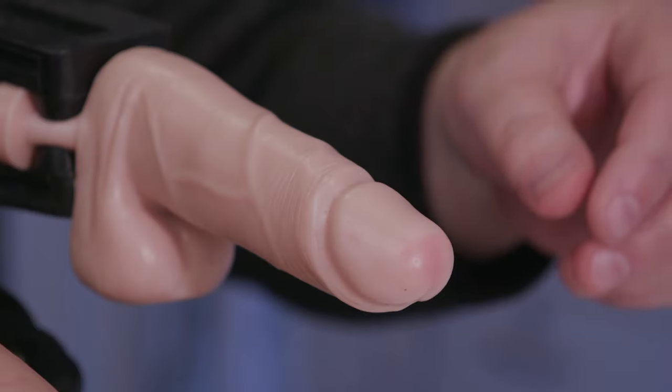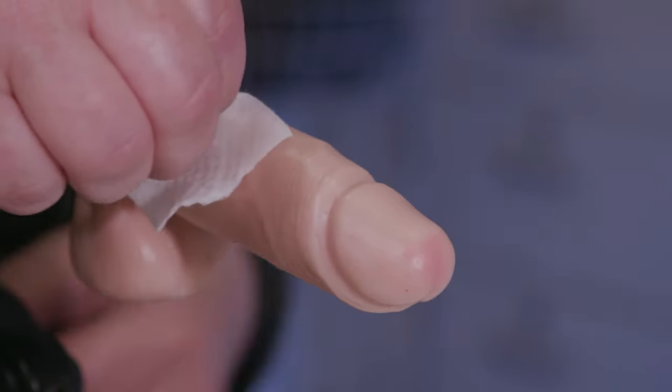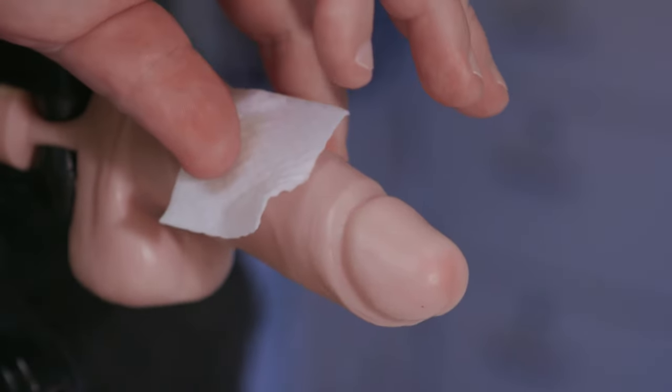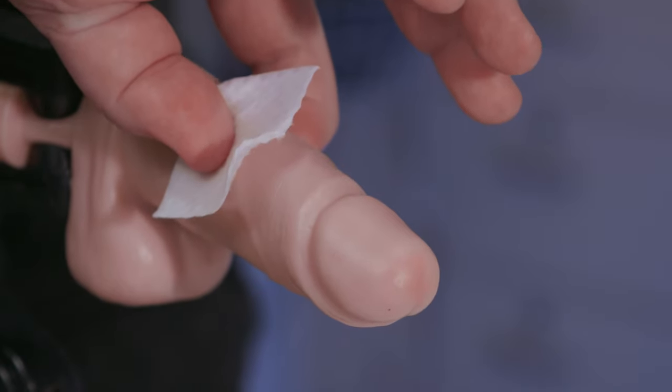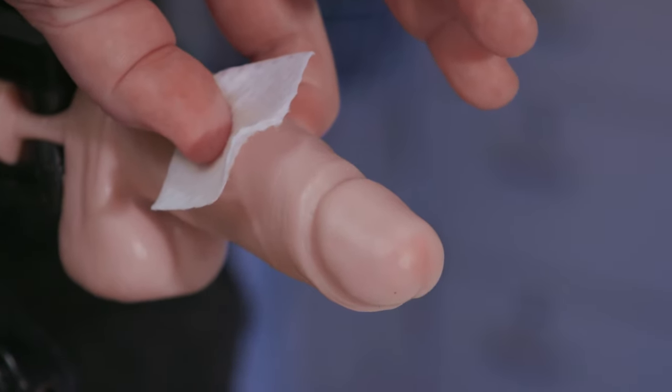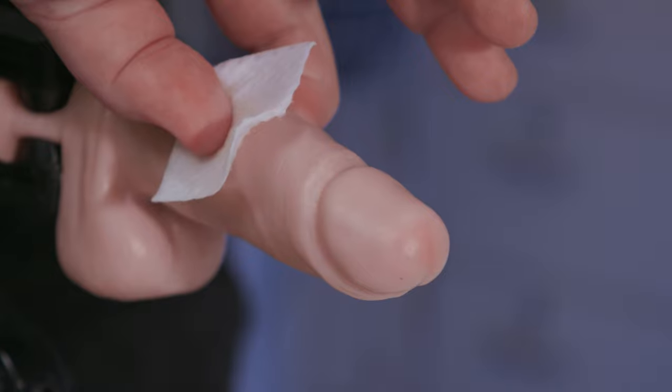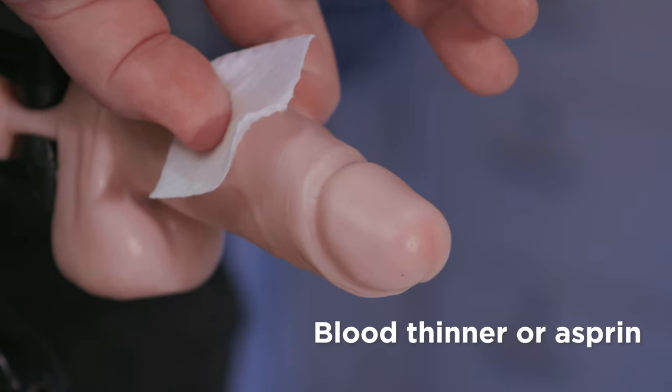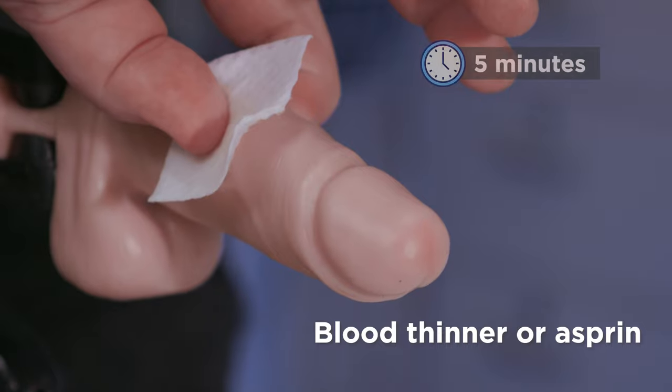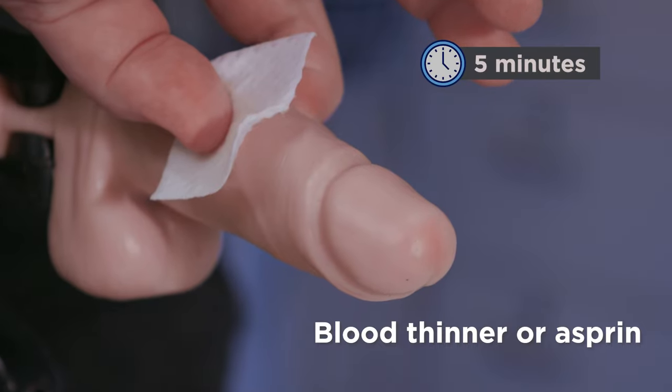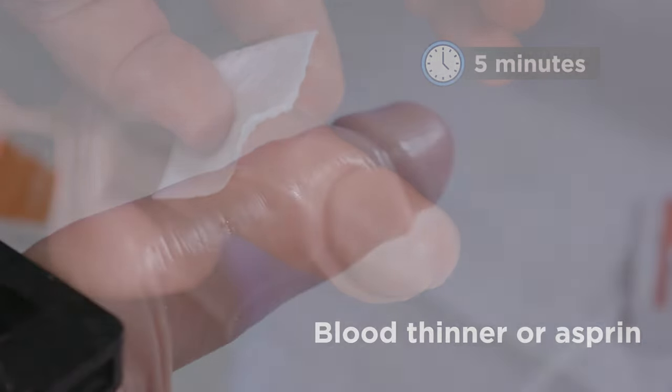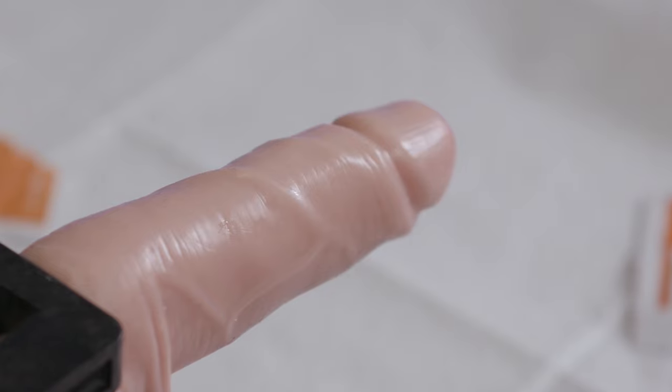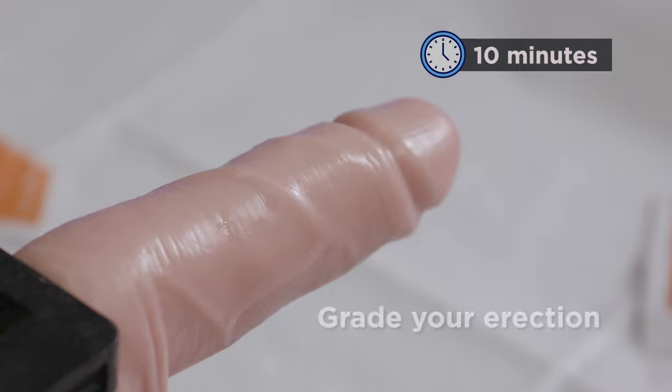Pick up the alcohol wipe and place it over the injection site. Hold it in place with your thumb and place your index finger on the opposite side of your penis. Apply pressure for 2 to 3 minutes. If you're taking a blood thinner or aspirin, apply pressure for 5 minutes. This will help decrease any bleeding or bruising. Then, stimulate yourself so you get an erection. After about 10 minutes, grade your erection.